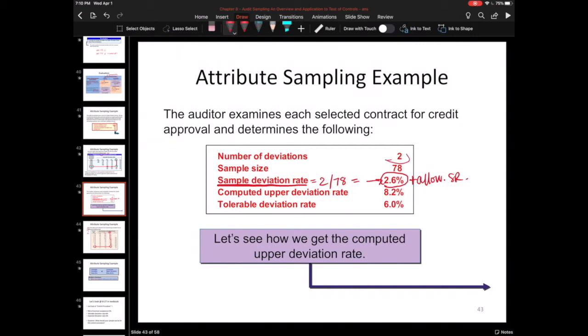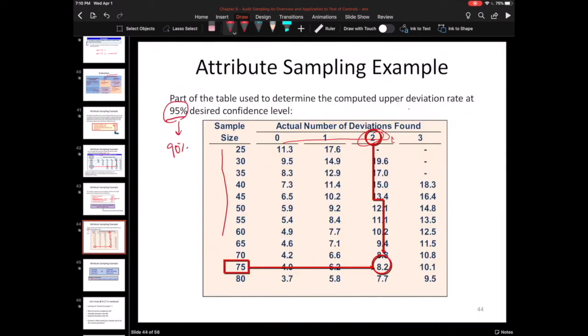In this case, we know we had two deviations and we know our sample size is 78. So I know I'm in this column here with the 2, but I don't see 78 down here. And so how do I know if I go 75 or if I go 80? Do I just round? If I just round, I would go 80. But that's not what this slide is doing. This slide is saying I should go 75. So basically, the rule here is always round down.